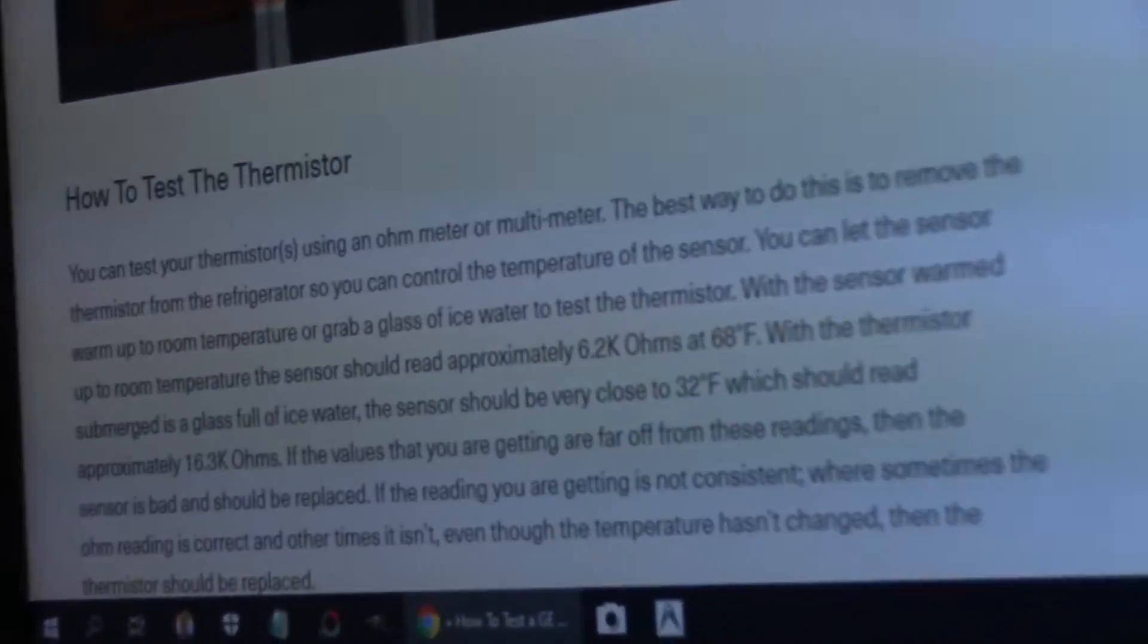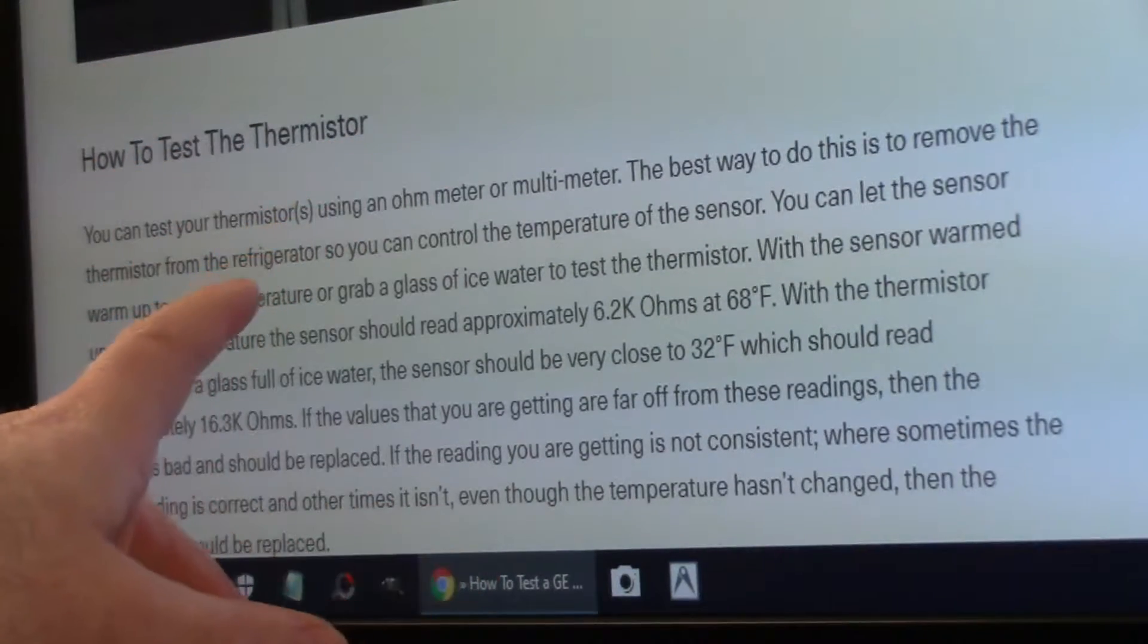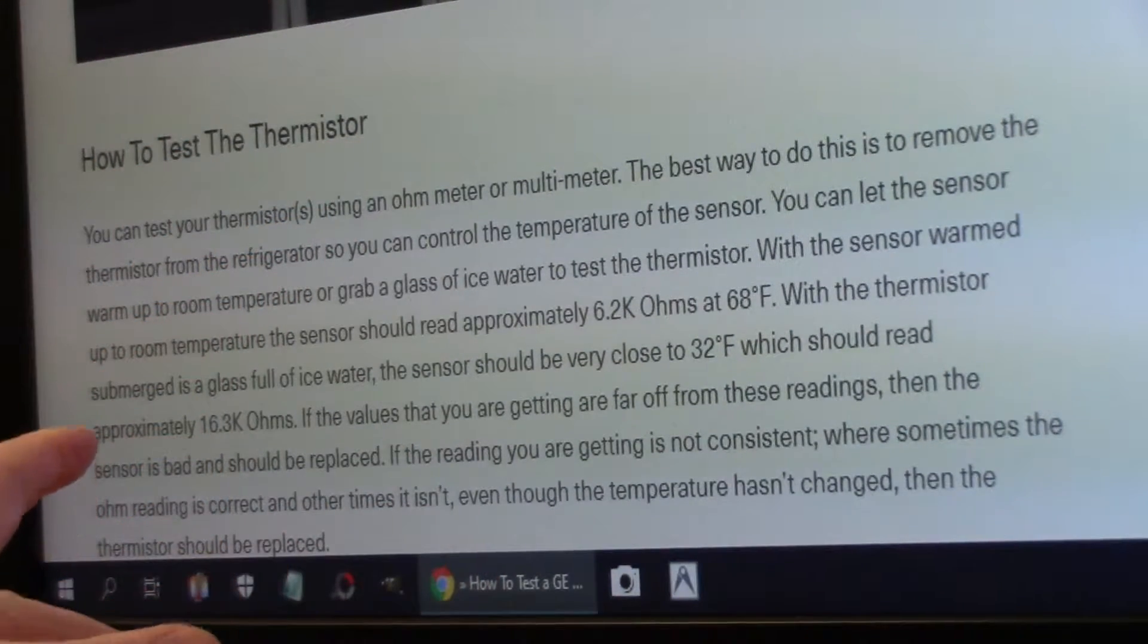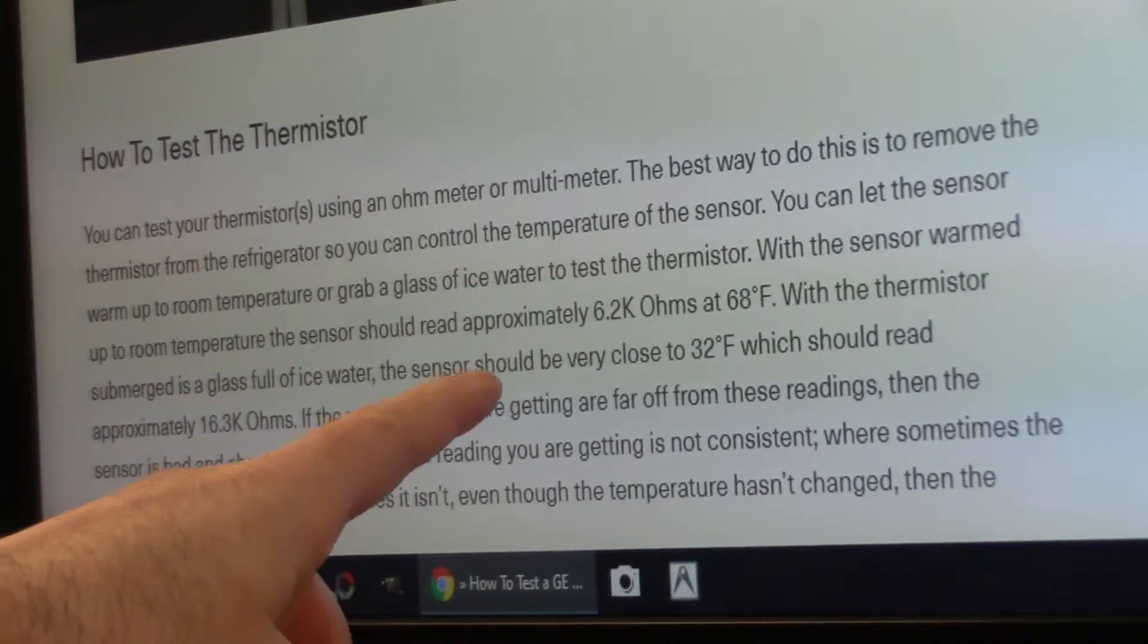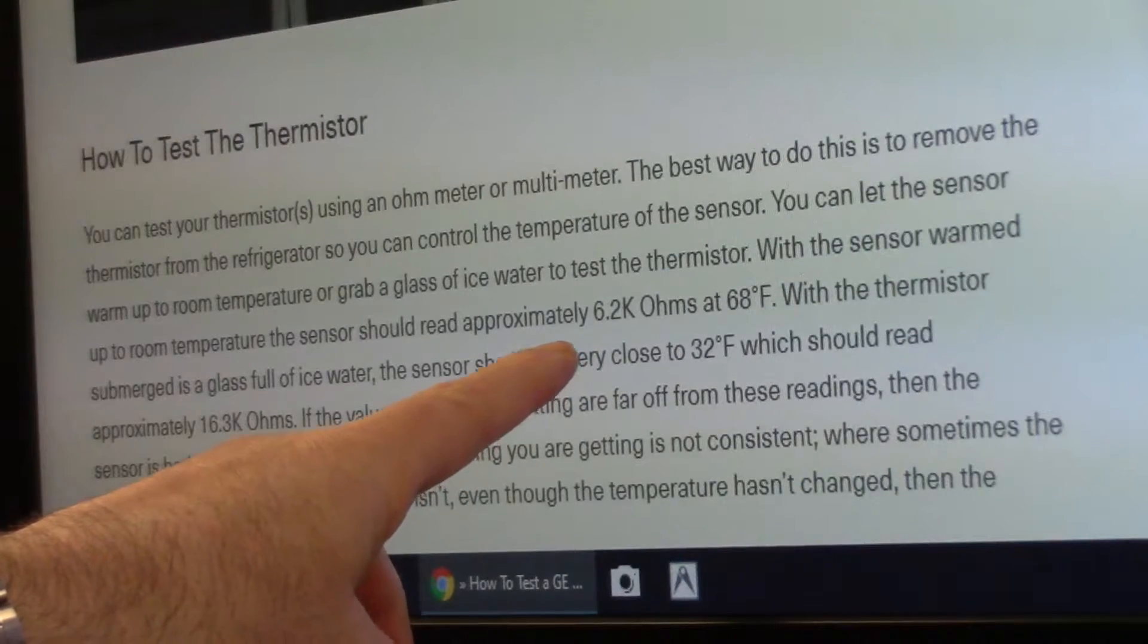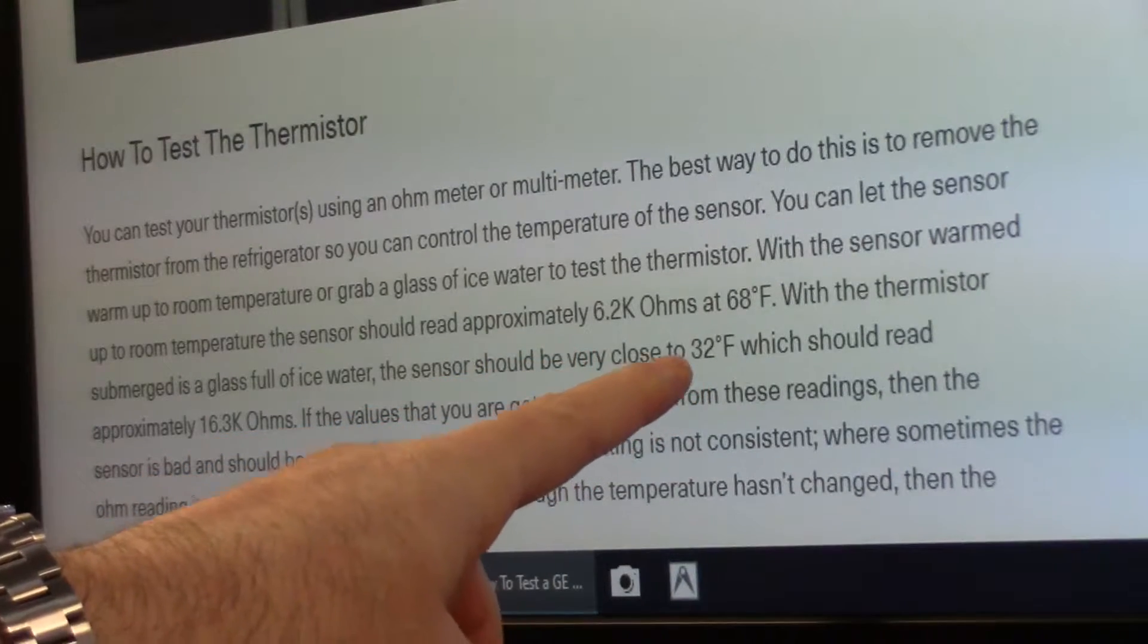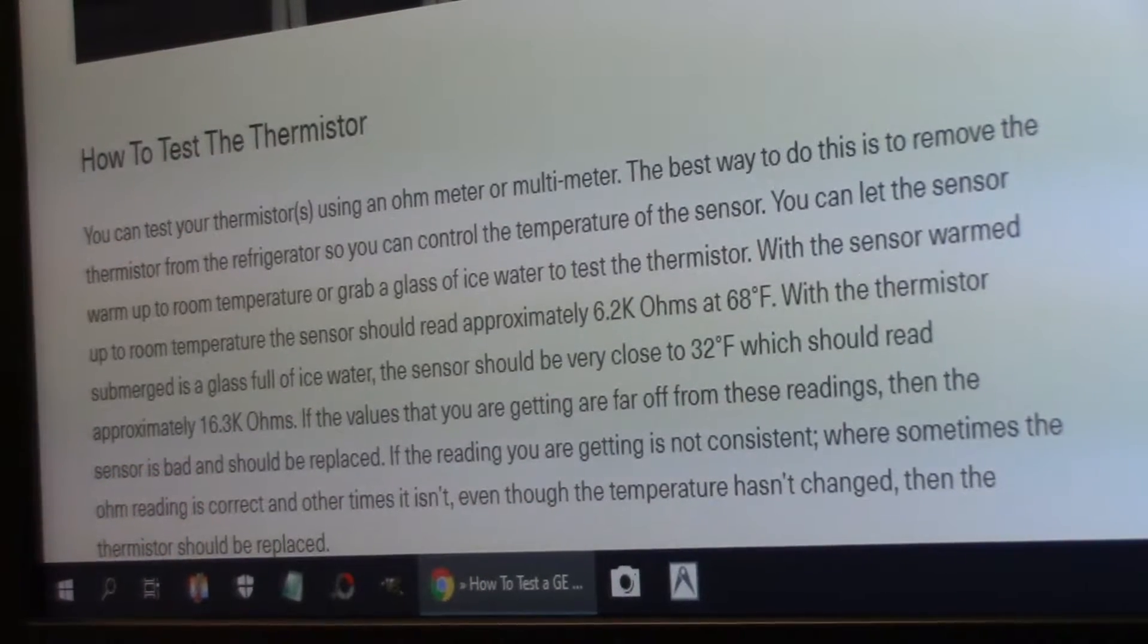Let's just look online here. I just did a Google search for GE temperature sensor testing and the site came up. At 68 Fahrenheit it should be reading about 6.2 kilo ohms and at freezing 32 Fahrenheit it should be reading 16.3 kilo ohms. So that's what we want to go by.